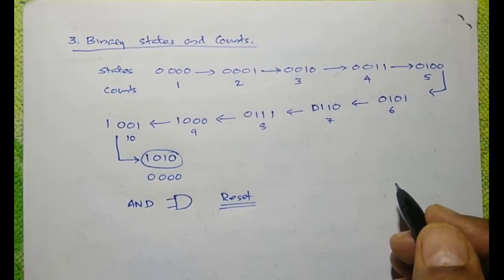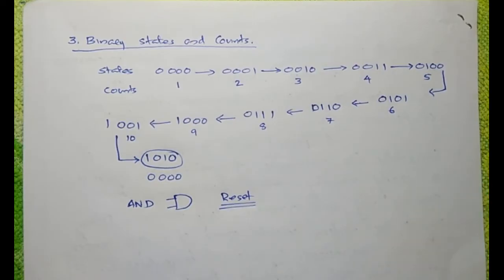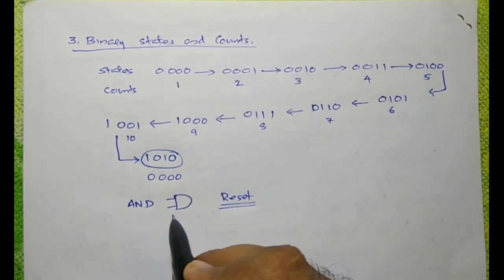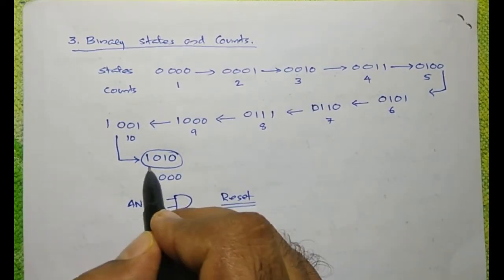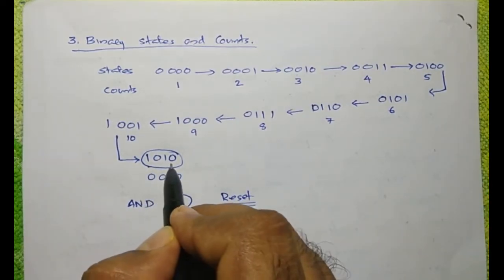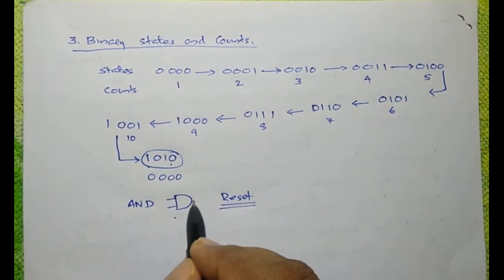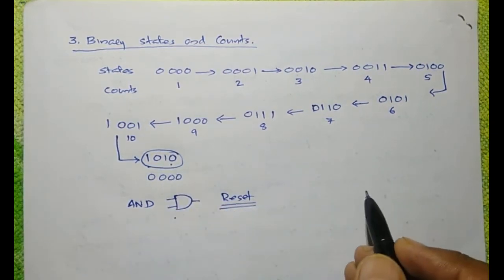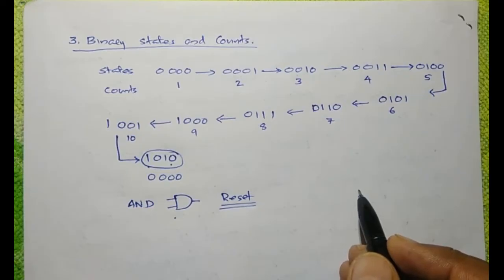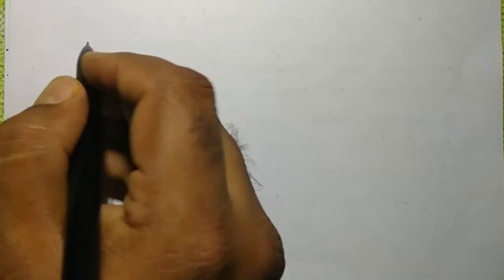The idea is to activate the AND gate when a 1010 is reached at the output of the counter. Now, we should make a circuit to satisfy this condition.